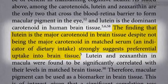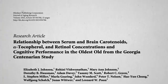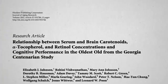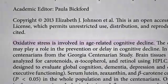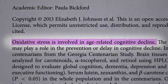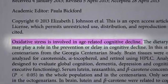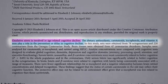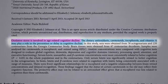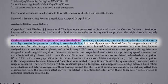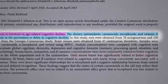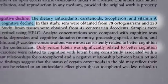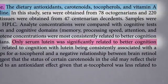The brain just preferentially sucks it up. For example, in the Georgia Centenarian Study, recognizing that oxidation is involved in age-related cognitive decline, they figured dietary antioxidants may play a role in its prevention or delay. So they looked at eight different ones — vitamin A, vitamin E, on down the list — and only lutein was significantly related to better cognition.